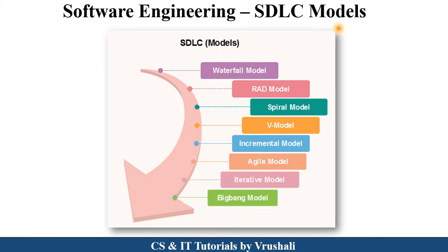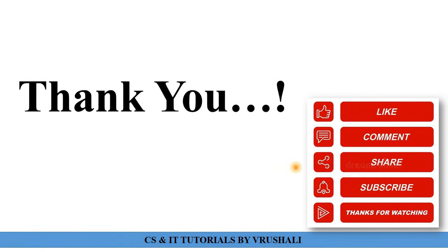The next topic is software engineering SDLC — Software Development Life Cycle — models. Different models are used by developers to develop a product: Waterfall model, RAD model, Spiral model, V model, Incremental model, Agile model, Iterative model, and Big Bang model. We will discuss all these models in detail in the next sessions as per the syllabus. This is all about the introduction to software engineering. Thank you, keep learning.